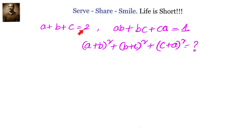a plus b plus c equals to 2, and ab plus bc plus ca equals to 1. Find the value of (a+b)² plus (b+c)² plus (c+a)². Now let us see what is given and what we need to find out. Let's just expand and check.